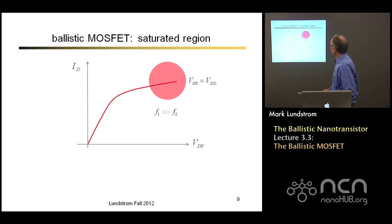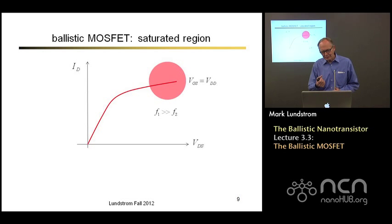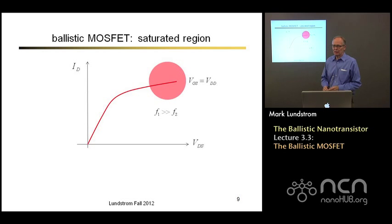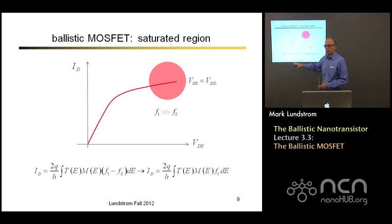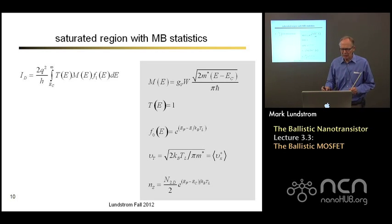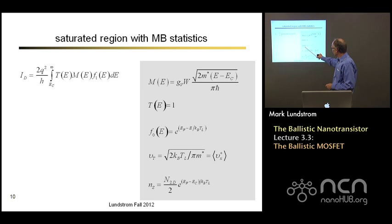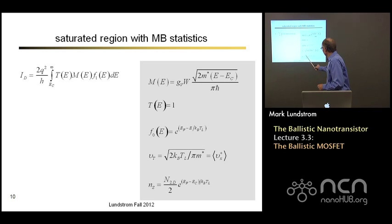Now let's compute the on-current, or the high-voltage current. We've applied a large voltage between drain and source. That large voltage pulls the Fermi level in the drain way down, meaning F1 is much greater than F2. In the high bias regime, we simply neglect F2. We'll use our expression for channels, ballistic transmission equal to 1, the Fermi function in the Maxwell-Boltzmann limit, unidirectional thermal velocity, and carrier density as related to the location of the Fermi level.